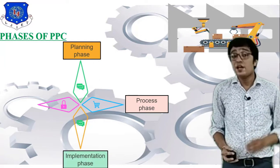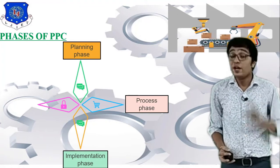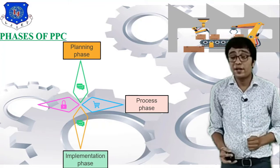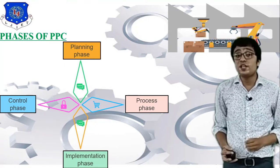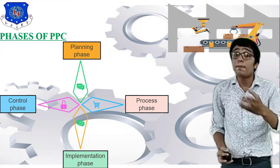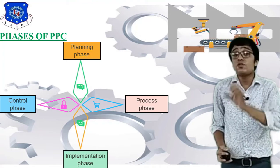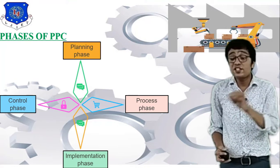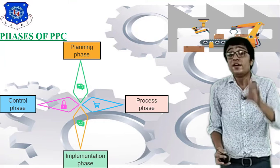The second phase is the process phase, which is carried out after completion of the planning phase and depends on operation sequences. The third phase is the implementation phase, where different types of operations are carried out. The fourth phase is the control phase, during which you must check and inspect your product — either during the process or after its completion.